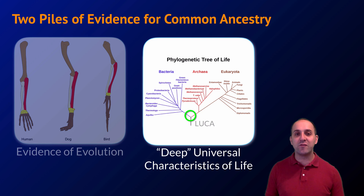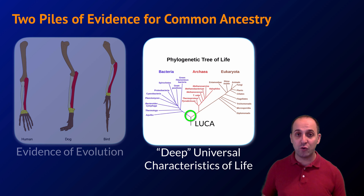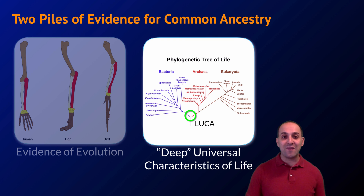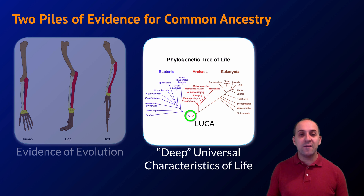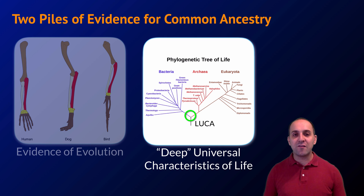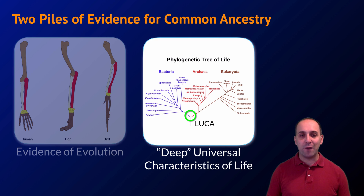There are two major piles of evidence for common ancestry. There's the evidence that supports the larger evolutionary theory — we talked about that in our Evidence for Evolution video, so we're not going to talk about that here. Here we're going to focus on the second pile of evidence, which is the deep universal characteristics of life. If we can figure out what characteristics all life has in common, that helps us understand the characteristics of our last universal common ancestor, or LUCA.